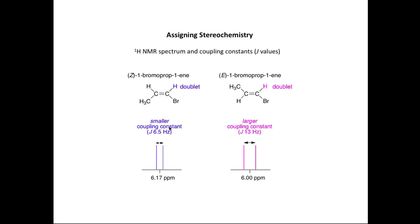When you look closely at the NMR spectra of these doublets, what you find is that the distance between the two lines in the doublets are different. So what we get for the Z isomer is we get a smaller coupling constant, 6.5 Hz. The distance between these two lines is relatively small.